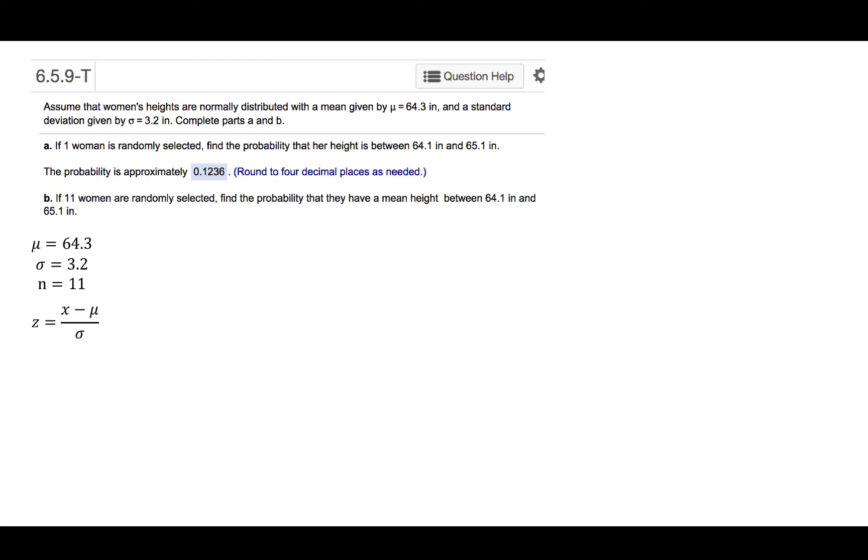We'll have to do this twice because we're finding the probability that one woman would be between 64.1 inches and 65.1 inches. So we'll begin by finding the z-score associated with 64.1. Using this formula, x minus mu over sigma, we get a z-score of minus 0.0625. Now we'll do that again using 65.1 inches. x minus mu over sigma gives us 0.25.